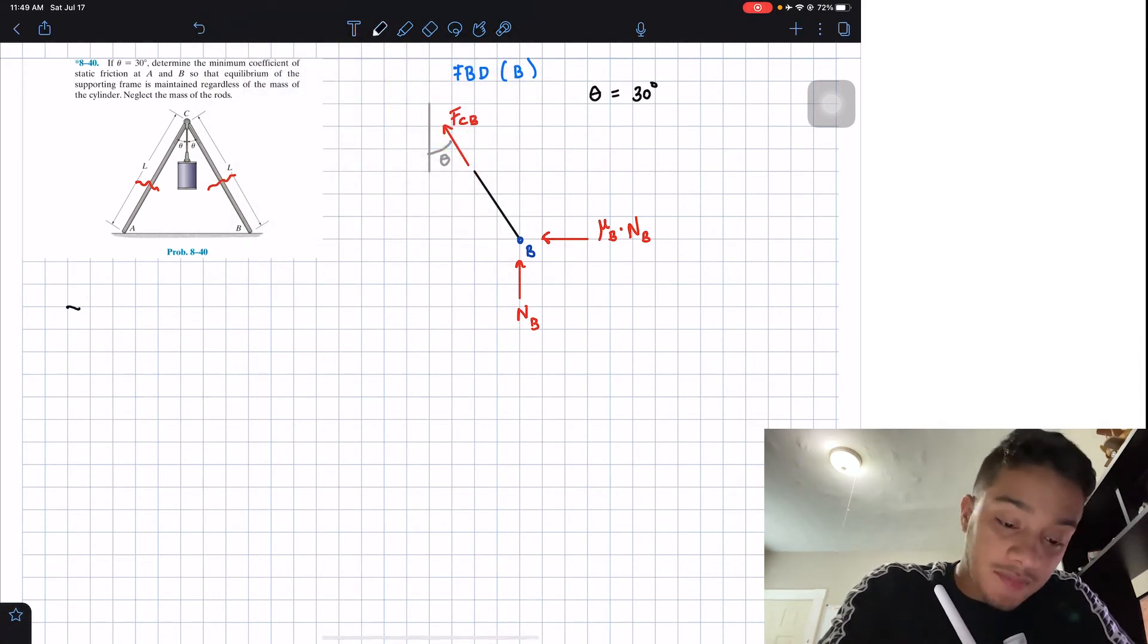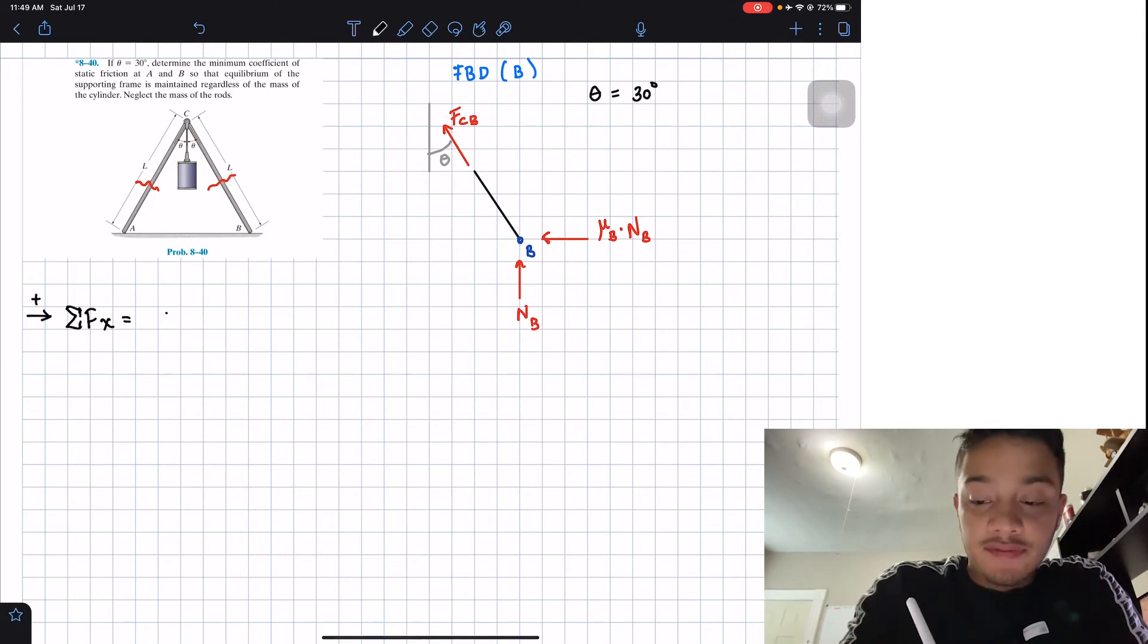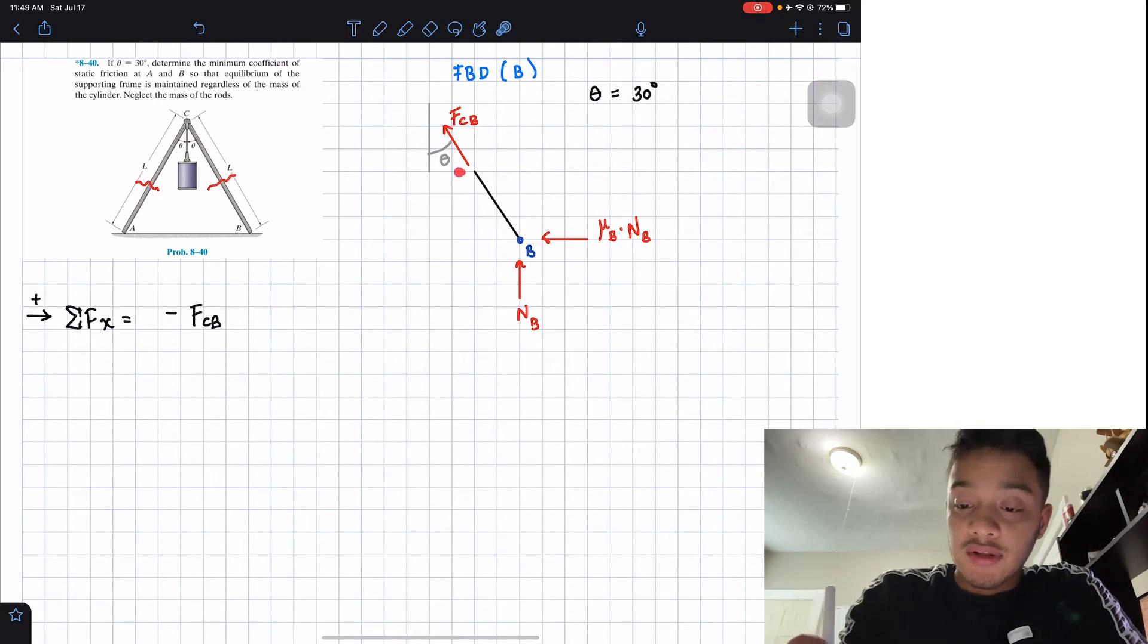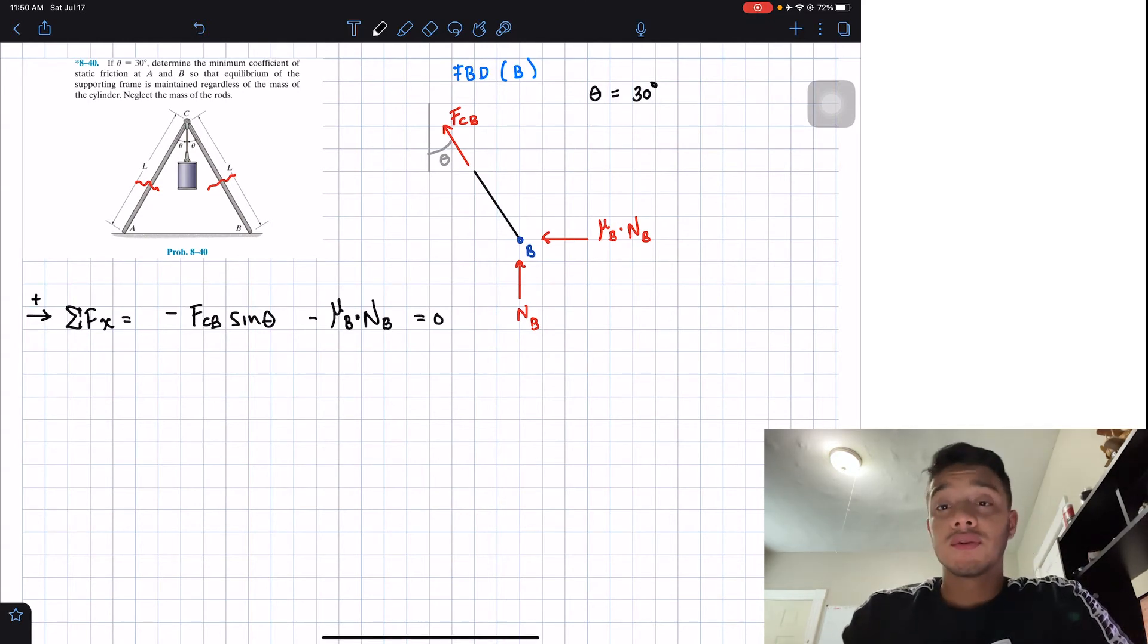So we have the summatory of forces in the x direction. We're going to assume that going to the right is positive. And what do I have? Well, I will have negative, my force Cv, but we want the x component. And my x component is this guy over here, which is the opposite. So we're going to use sine of theta. In this case, we also have negative mu's of B times NB that my force is going to the left. And that's all I have for it here. So all this equal to zero.